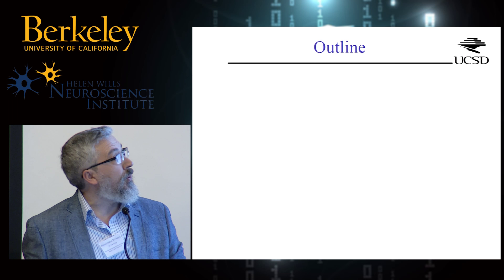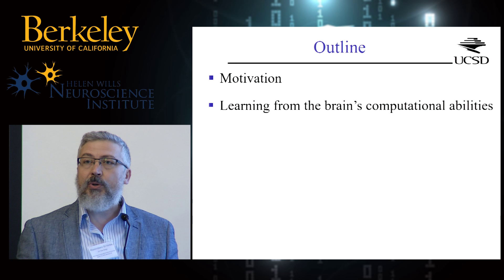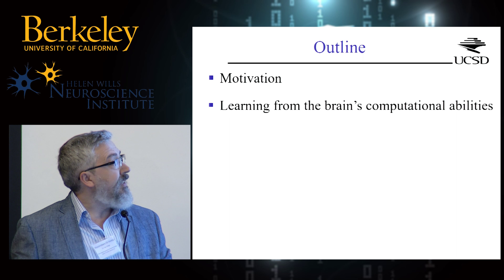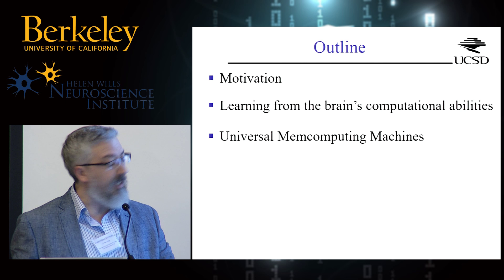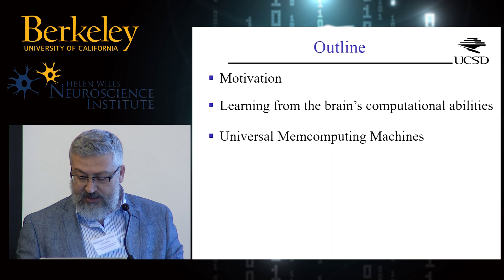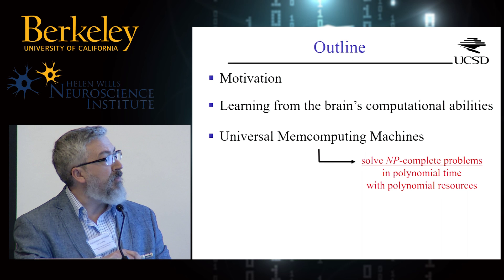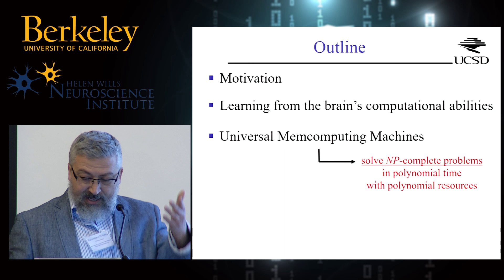Let me quickly go through the motivation — this is a crowd that probably doesn't need much motivation. Then I will tell you what we try to learn from the brain's computational ability, which will lead me to a new computing paradigm we call universal mem computing machines. I'm a theoretical physicist, not a computer scientist or engineer. But we can prove mathematically that these machines, if they can be built in practice, can solve very complex problems like NP-complete problems in polynomial time with polynomial resources.